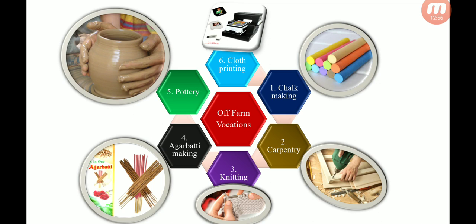Here we can see some off-farm vocations. These include chalk making, carpentry, knitting, agarbatti making, pottery, and cloth printing. These are six examples of off-farm vocations, in addition to the four types of on-farm activities we already discussed.